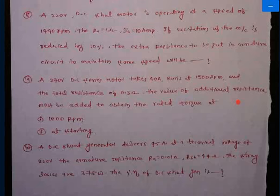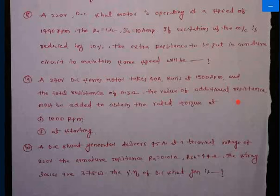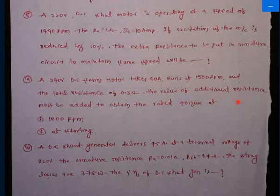Today we are going to do some numerical problems related to DC machines. Looking at the third problem, which is related to the DC shunt generator — this is a problem dealing with losses. A DC shunt generator delivers 45 amperes at a terminal voltage of 220 volts. The armature resistance is 0.01 ohms, shunt resistance is 44 ohms, and the stray losses are 375 watts.